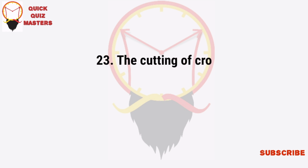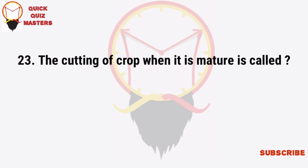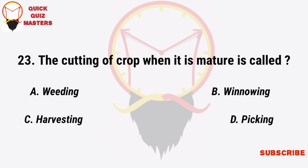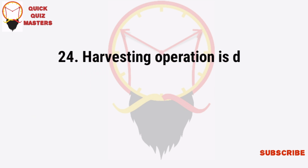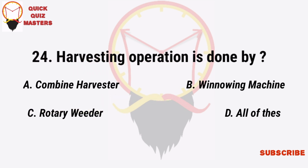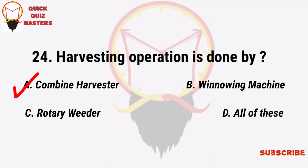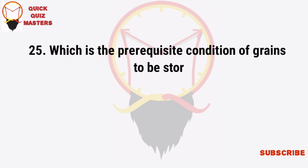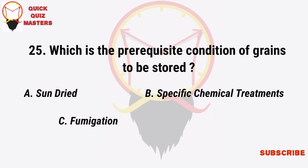The cutting of crop after it is mature is called weeding, winnowing, harvesting, or picking. Harvesting operation is done by combine harvester, winnowing machine, rotary weeder — all of these. The pre-required condition of grains to be stored is sun dried, specific chemical treatments for fumigation — all of these.